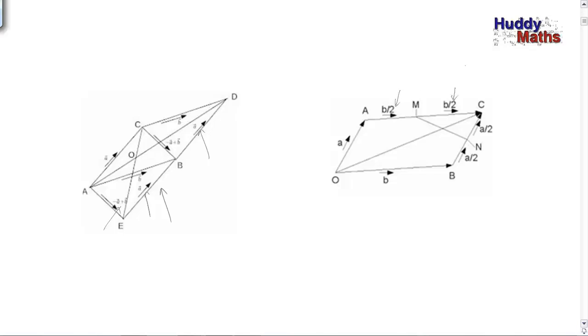Here's a key idea: if M is the midpoint of AC and the whole line AC is vector b, then the two pieces AM equals MC, and each is a half of b.